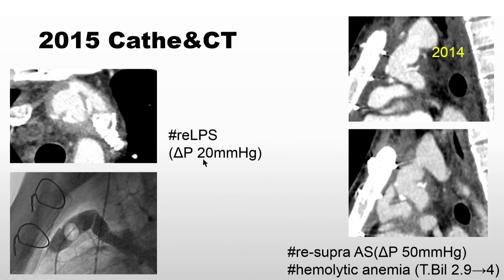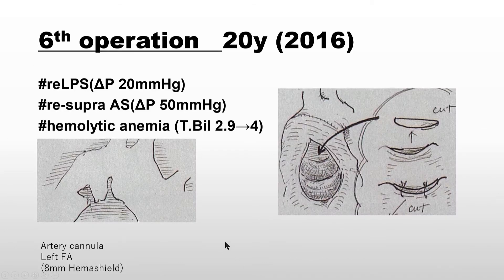After the fifth operation, CT still showed some pressure gradient in the left pulmonary arteries. The ascending aorta still had a curve and kinking. Hemolytic anemia was still present. So a sixth-time redo operation was performed.